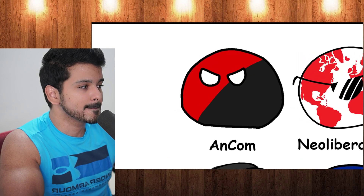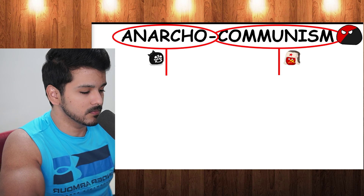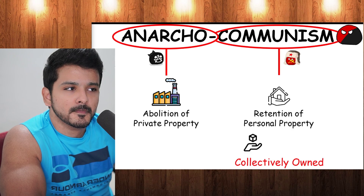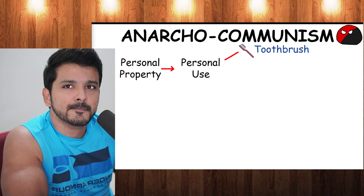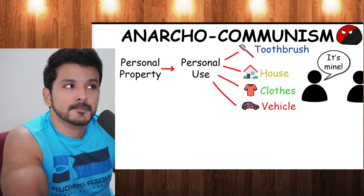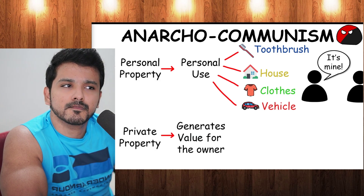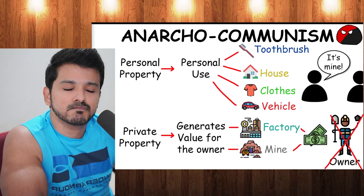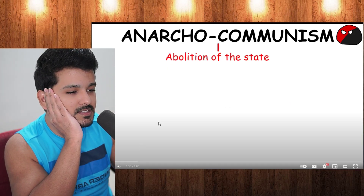Anarcho-communism combines characteristics of anarchy and communism, advocating for the abolition of private property but the retention of personal property, and collectively owned items. Personal property includes items intended for personal use — such as a toothbrush, a house, clothes, and a vehicle. Private property, on the other hand, usually refers to something that generates value for its owner, like a factory or a mine — usually generating capital without the owner necessarily performing any physical labor.